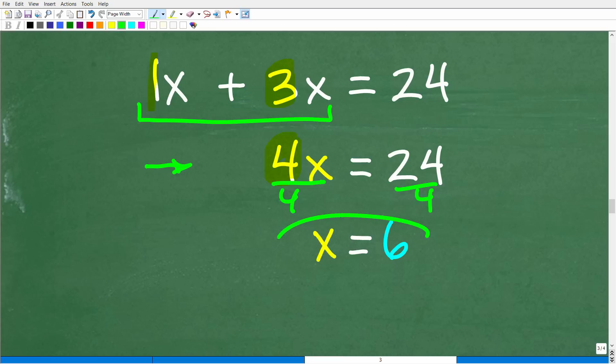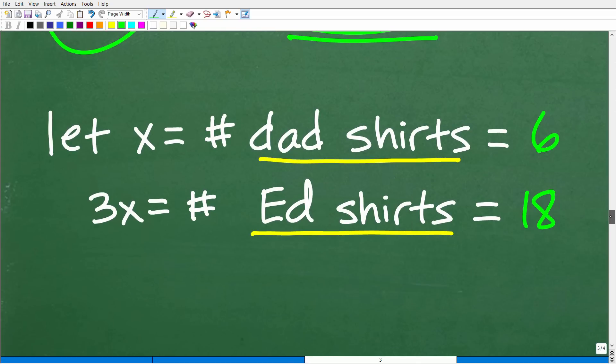So 24 divided by 4, of course, is 6. All right, so at this point, we are all happy. We're like, yay, I solved the problem. Well, we have X is equal to 6. We didn't answer the question, right? We have to go back and make sure we answer the question, and that is how many shirts does each have? So we have to go back to our setup.